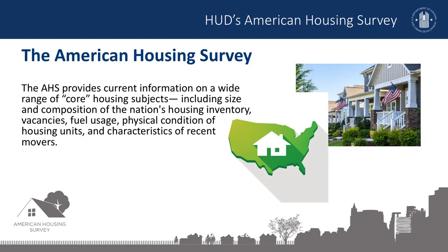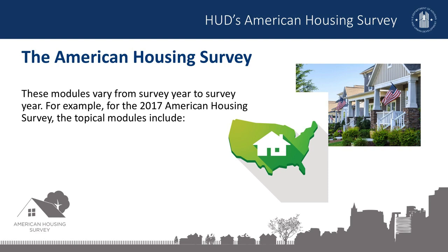The AHS provides current information on a wide range of core housing subjects, including size and composition of the nation's housing inventory, vacancies, fuel usage, physical condition of housing units, and characteristics of recent movers, to name a few. These core subjects mostly stay the same from survey year to survey year. In addition to the core data, the AHS collects topical data using a series of supplemental modules, which vary from survey year to survey year.